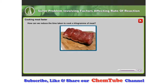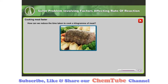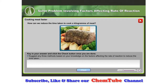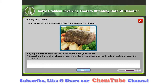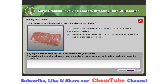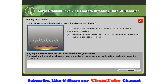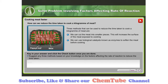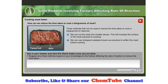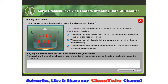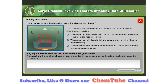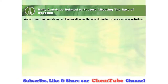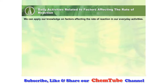What can you do to reduce the time taken to cook a kilogram of meat? Suggest any three methods based on your knowledge on the factors affecting the rate of reaction. We can cut the meat into smaller pieces — this will increase the surface area of the meat exposed to cooking. We can use biological catalysts known as enzymes to soften the meat before cooking. We can also increase the pressure and temperature used to cook the meat by using a pressure cooker.